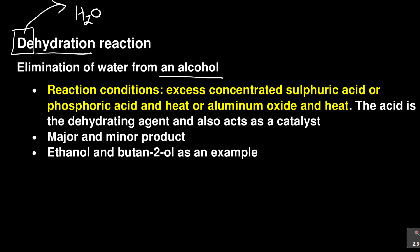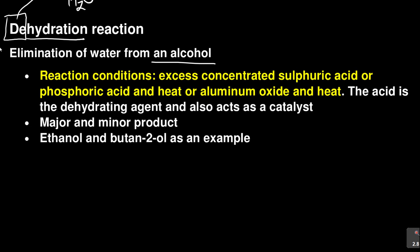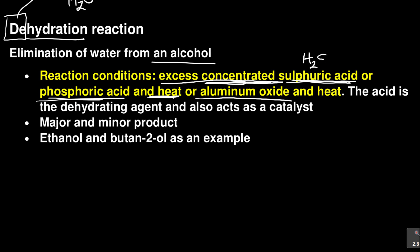The reaction conditions: as I said, whenever they talk about elimination you need strong reactants. In the previous lesson when we were eliminating a hydrogen halide we used a strong base — sodium hydroxide in ethanol. Here it says excess concentrated — very harsh conditions. It's concentrated sulfuric acid or phosphoric acid, and you need heat. You can also use aluminum oxide.